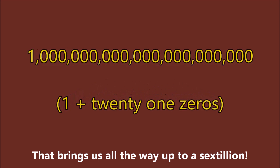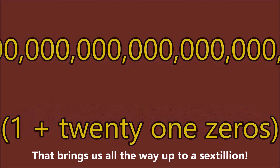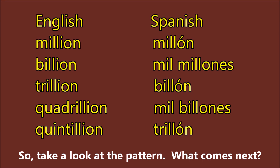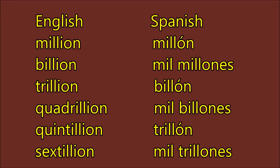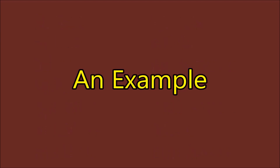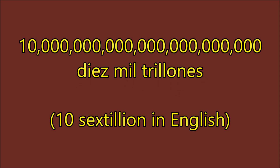That brings us all the way up to a sextillion. Take a look at the pattern — what comes next? If you said mil trillones, you are absolutely correct. Let's take a look at an example: ten sextillion would be diez mil trillones.